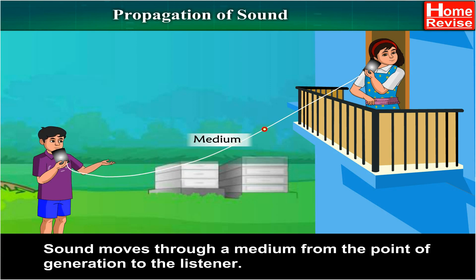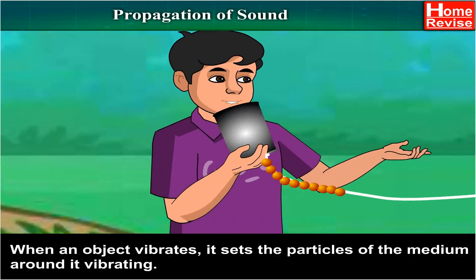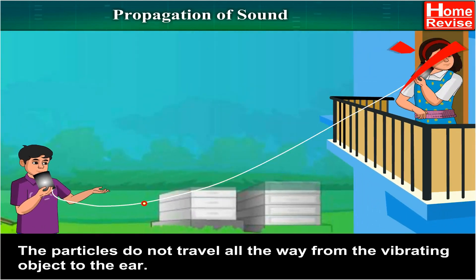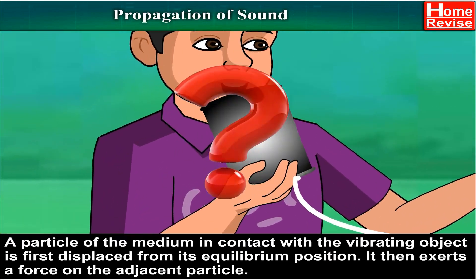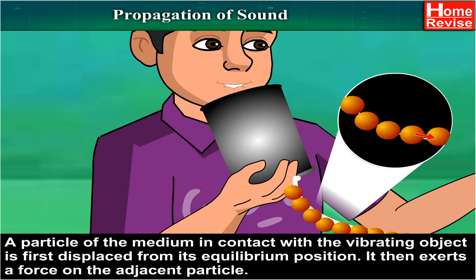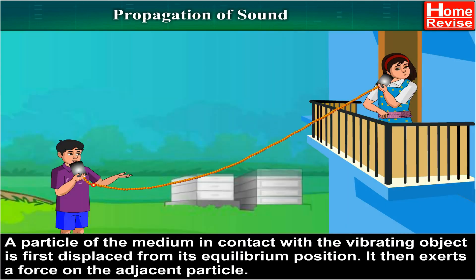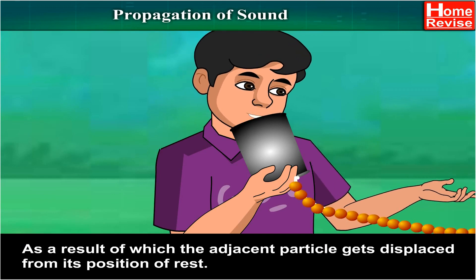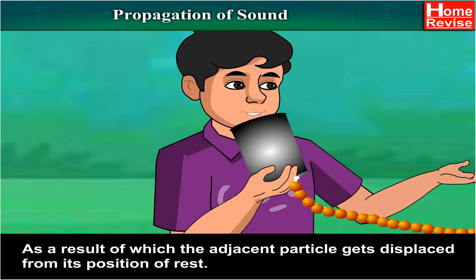When an object vibrates, it sets the particles of the medium around it vibrating. The particles do not actually travel all the way from the vibrating object to the ear. A particle of the medium in contact with the vibrating object is first displaced from its equilibrium position. It then exerts a force on the adjacent particle, as a result of which the adjacent particle gets displaced from its position of rest.